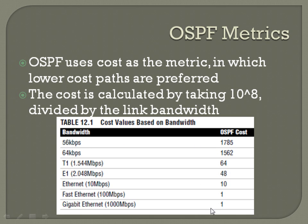One shortfall of OSPF is that once you get into links that are fast enough, the OSPF cost becomes one. For instance, taking 100 million and dividing it by fast Ethernet's 100 megabits per second — or 100 million — it divides into one.